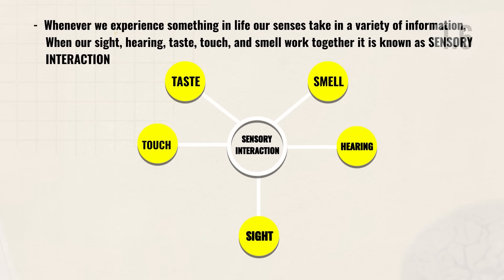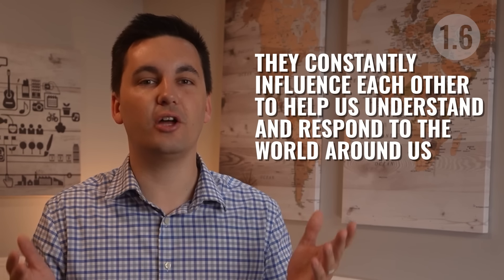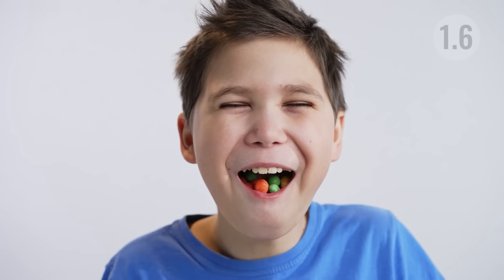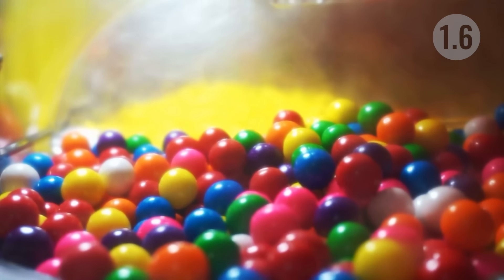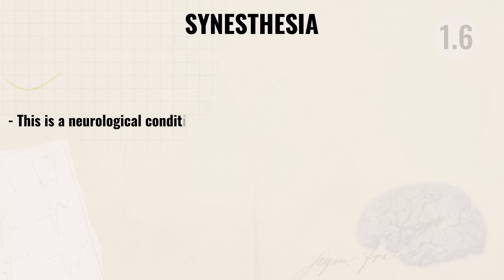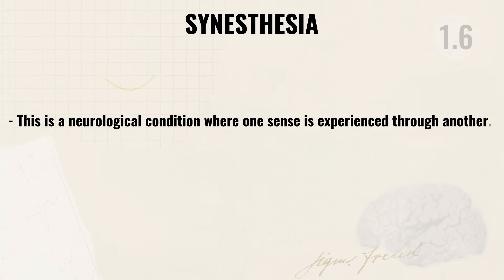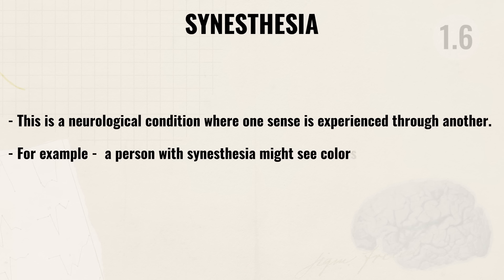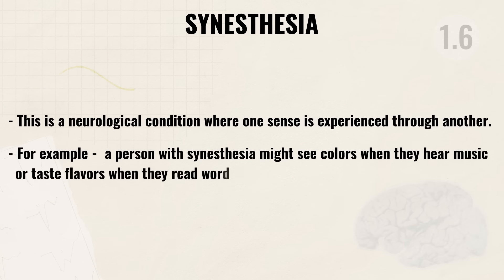Our senses don't operate in isolation — they constantly influence each other to help us understand and respond to the world. For example, if you eat Skittles while plugging your nose, each color will taste the same; but while smelling them, you experience different flavors. Before breaking down the sensory systems, I want to highlight synesthesia — a neurological condition where one sense is experienced through another. For example, a person with synesthesia might see colors when they hear music or taste flavors when they read words.